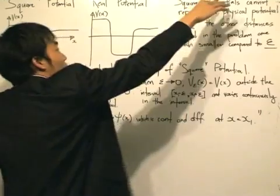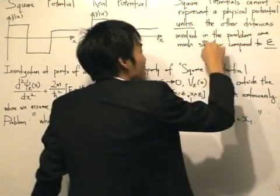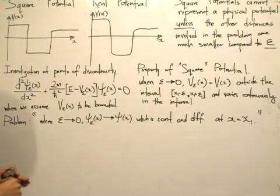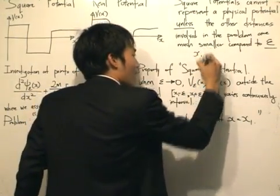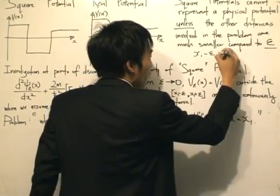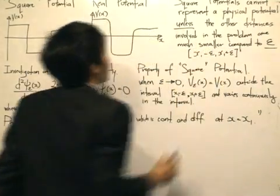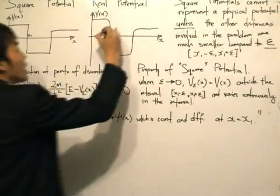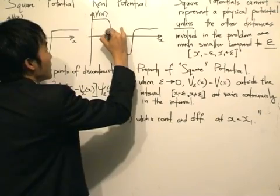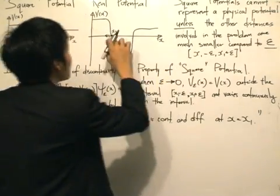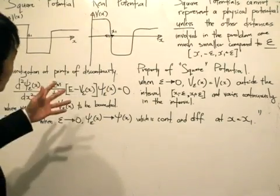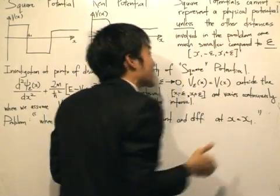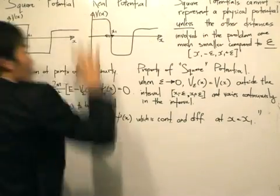Square potentials cannot represent a physical potential unless the other distances involved in the problem are much smaller compared to epsilon. Epsilon, for this lesson, is defined as the interval from x1 minus epsilon to x1 plus epsilon, where the potential dramatically changes, giving a width of 2 epsilon. If this distance is small compared to other distances in the problem, we can use a square potential to represent a real potential.